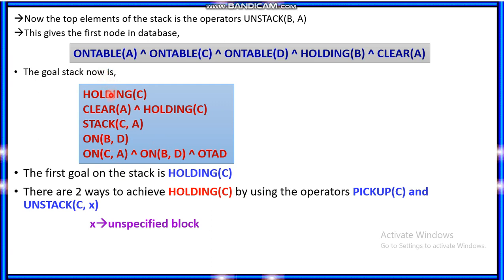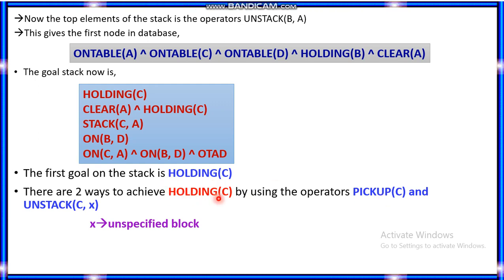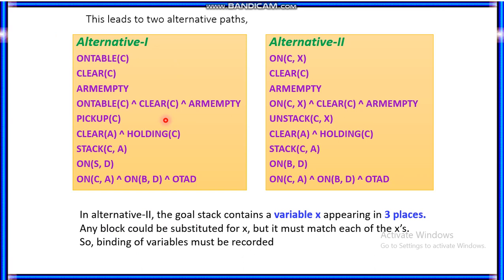The first goal on the stack is now holding(C). To achieve holding(C), two operators are available: pick-up(C) or unstack(C, X). In the second alternative using unstack(C, X), the goal stack contains a variable X appearing in three places, and any block can be substituted for X, but bindings must match and be recorded. This is a tedious task. Pick-up(C) is the simpler option, but we first consider alternative two.